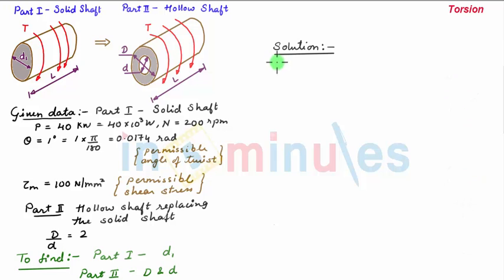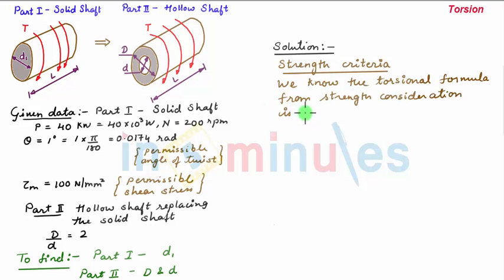So we first consider strength criteria. We know the torsional formula from strength consideration, which is 1.909×10⁶.